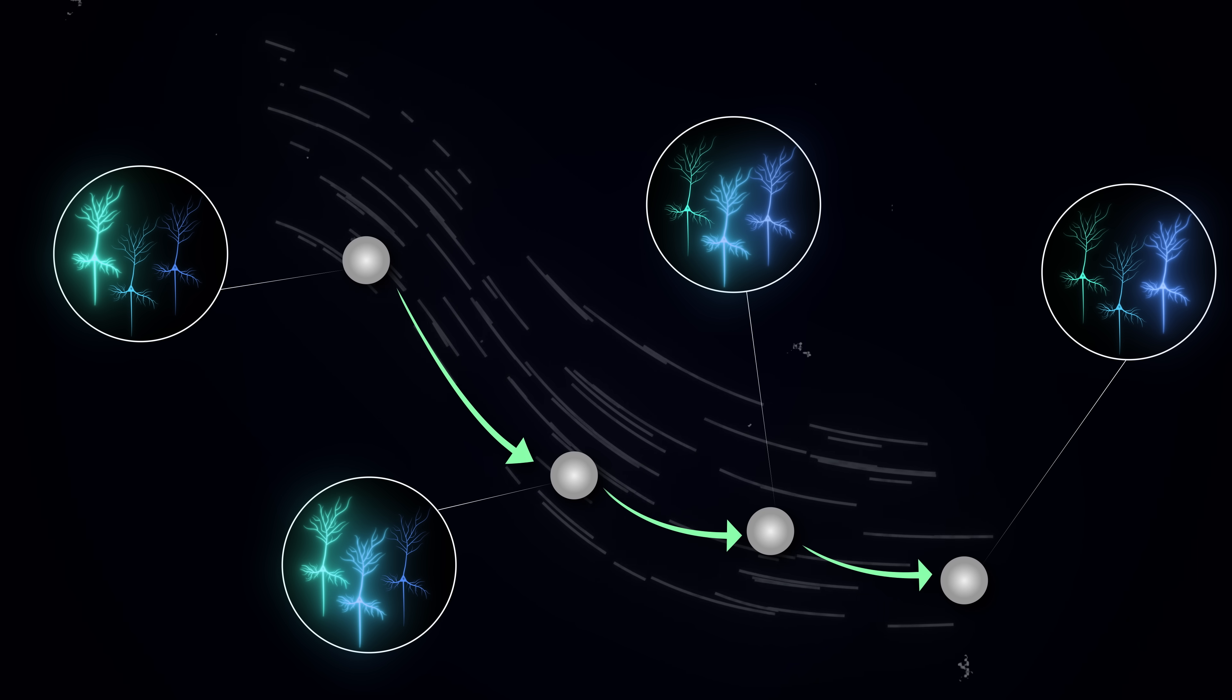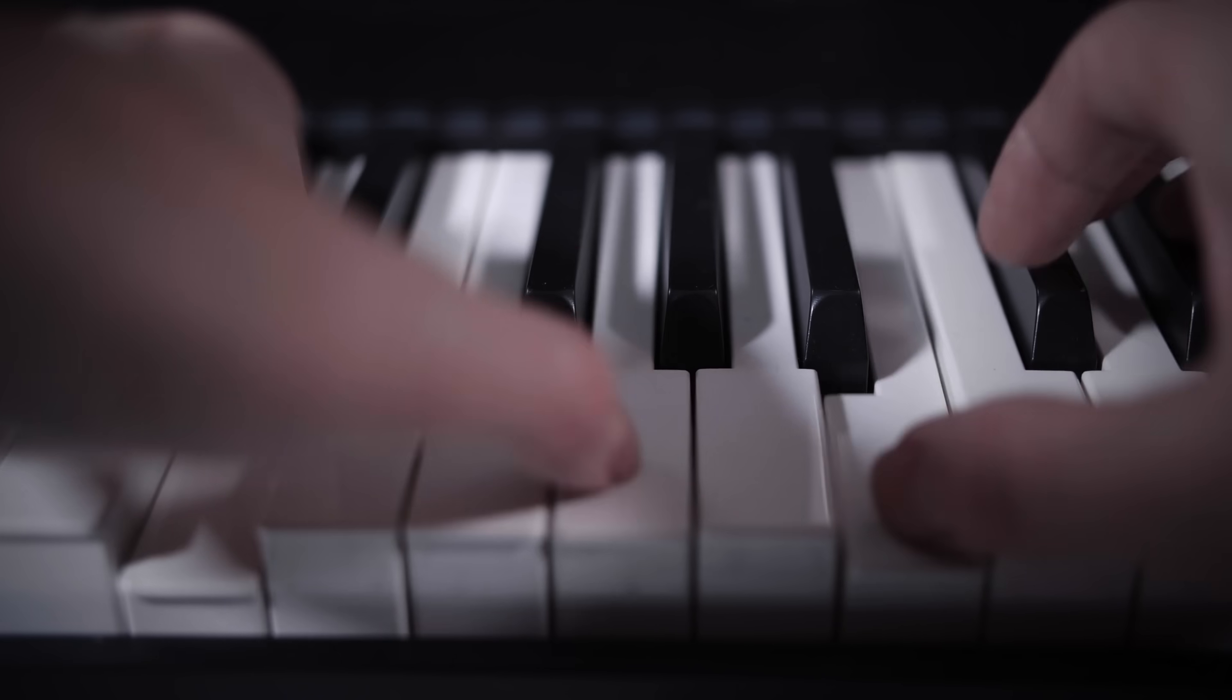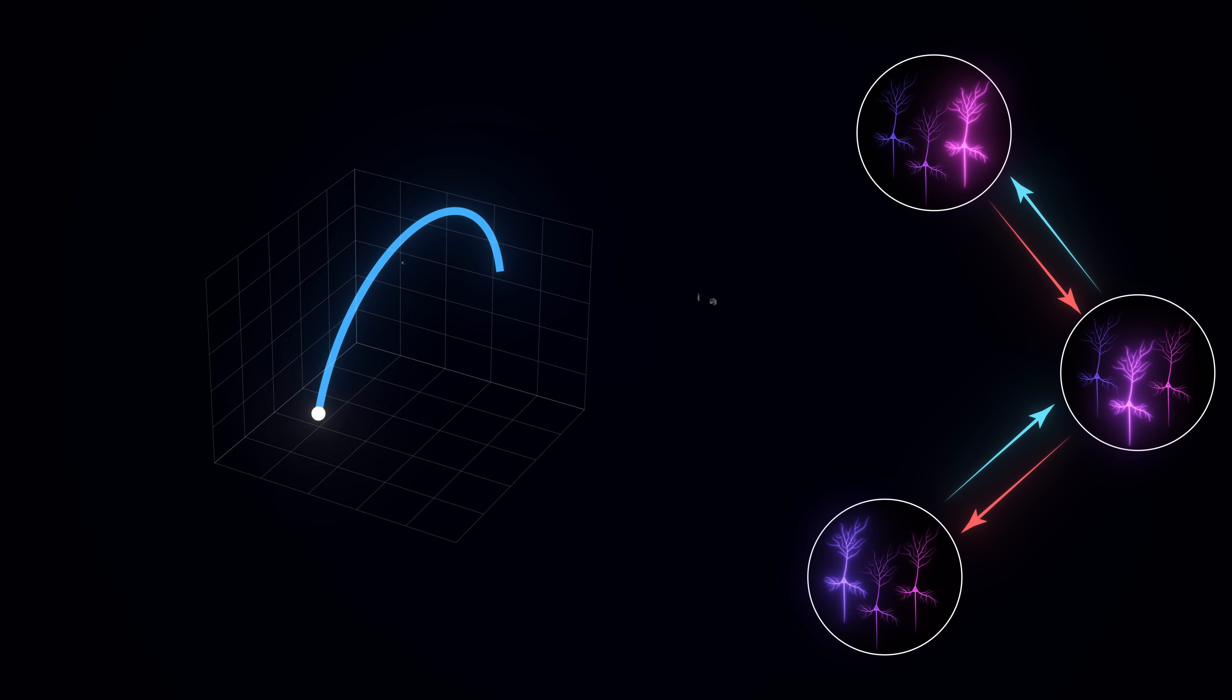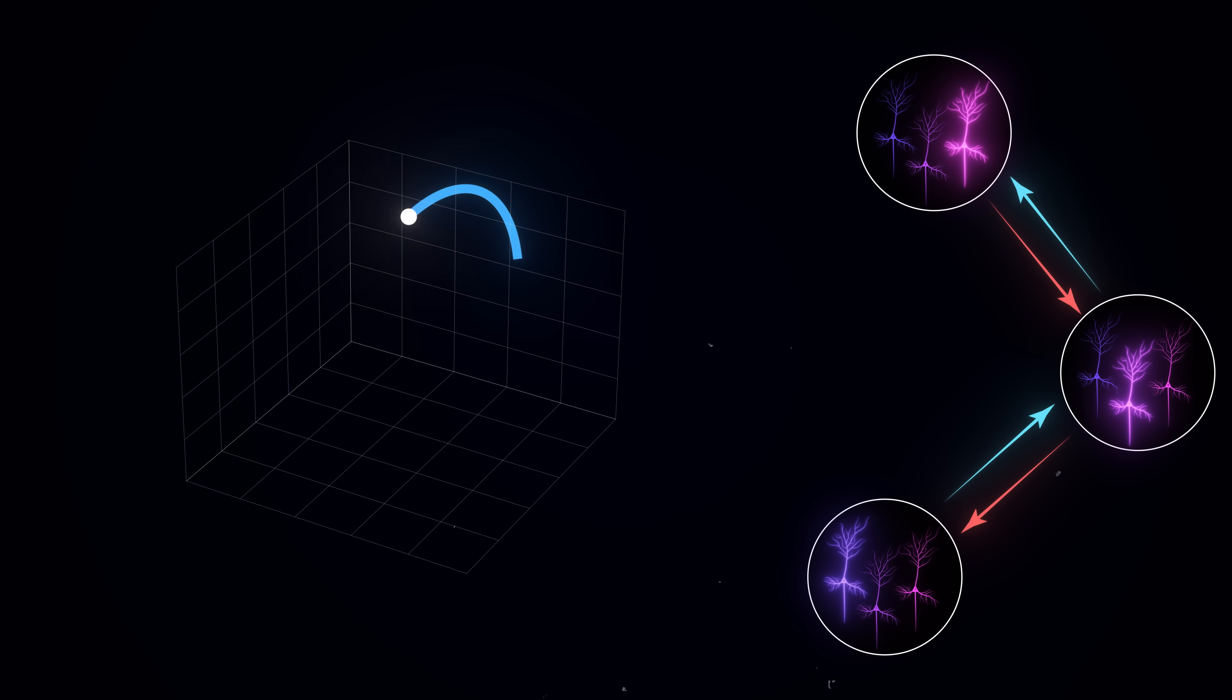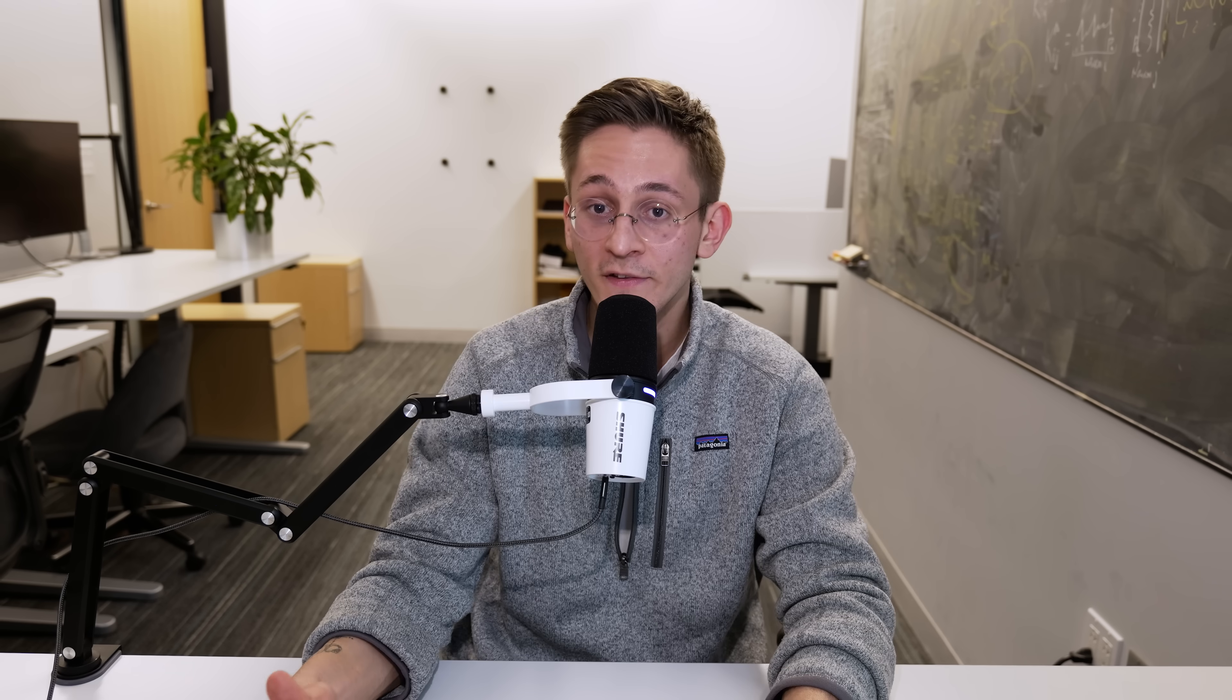What we have seen today reveals something really profound about how our brains work. Just like a river has channels that water naturally follows, physical connections between our neurons create preferred flows of neural activity. While we can learn new skills and adapt our behavior in remarkable ways, there are still some fundamental constraints on neural dynamics that we cannot overwrite, because they are built into the very architecture of our neural circuits. So when we struggle to master new skills, it may not be because of lack of motivation or practice, but because they require playing out specific sequences of neural patterns that go against our brain's intrinsic dynamics. On the flip side, skills that feel natural might be those that work with those intrinsic dynamics, rather than against them. But one thing is clear. Our brains are not infinitely flexible computers that can be programmed to do anything. They are biological systems with their own sets of rules and preferences. And understanding those constraints might be the key to understanding why we learn and think the way we do.